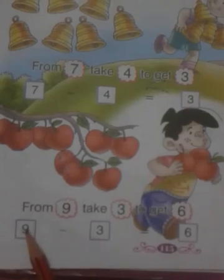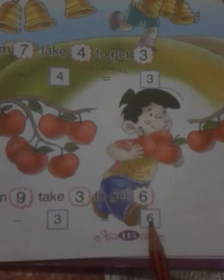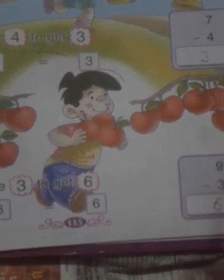Students, nine fruits. We have nine fruits, and three fruits are taken away. How many remain? Six. Nine fruits minus three fruits equals six. We have to do this in this way.